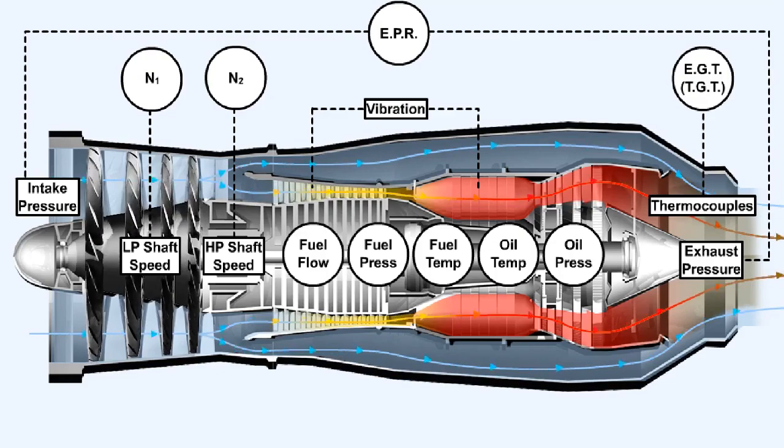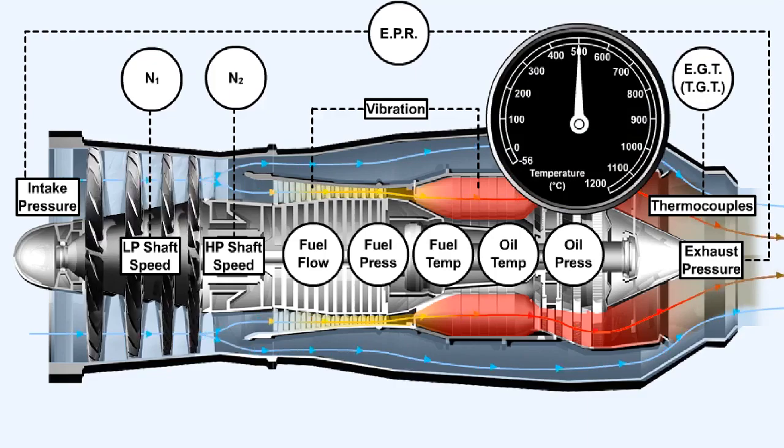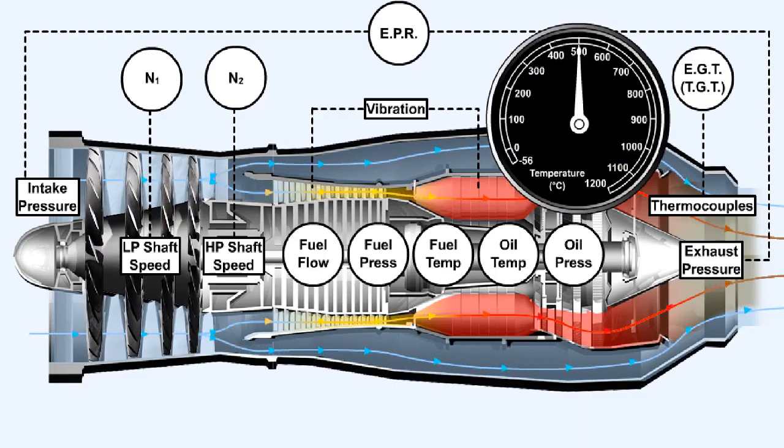The following temperatures are monitored on gas turbine engines: engine air inlet temperature, exhaust gas temperature, engine oil temperature, and internal air systems temperature. The temperatures monitored may range from minus 56 degrees Celsius to plus 1200 degrees Celsius. Different sensors are used depending on the temperature range to be monitored.